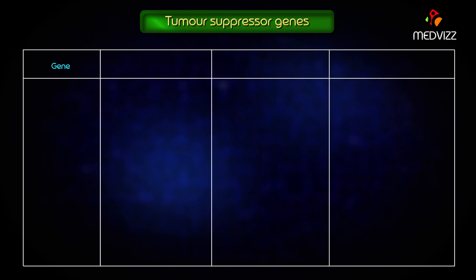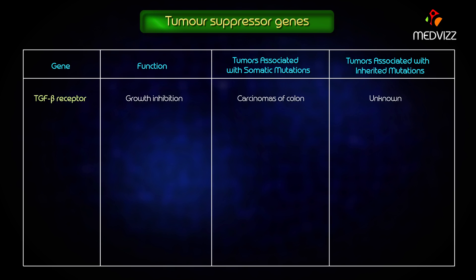Now let us discuss a few important tumor suppressor genes, covering their functions and tumors associated with somatic and inherited mutations. The first is the transforming growth factor beta (TGF-β) receptors, whose function is growth inhibition. Tumors associated with somatic mutations are carcinomas of the colon; inherited associations are unknown. The second is E-cadherin, whose important function is cell adhesion. Carcinoma of the stomach is the tumor associated with somatic mutation, and familial gastric cancer is the inherited association.